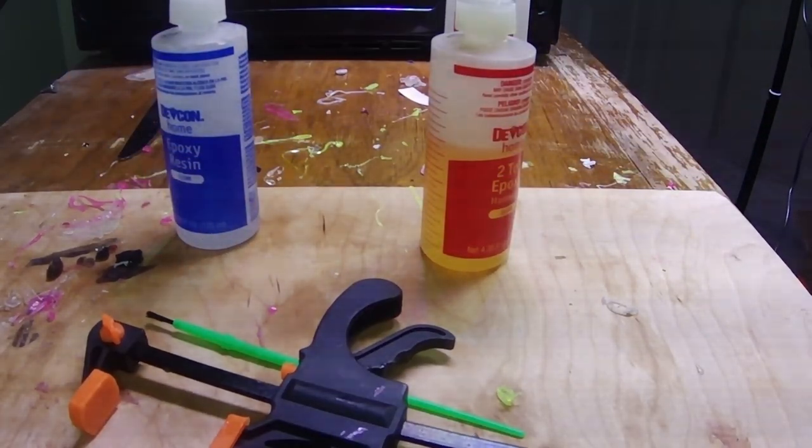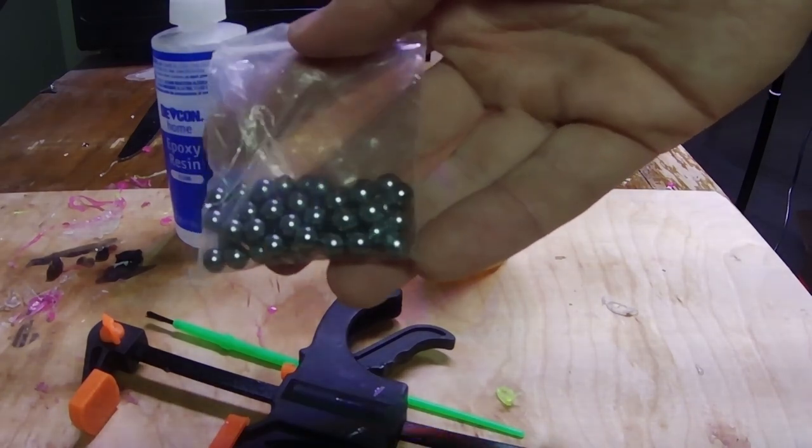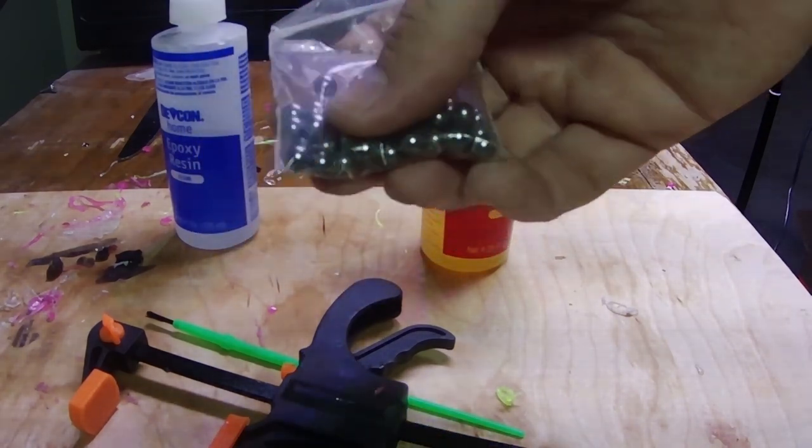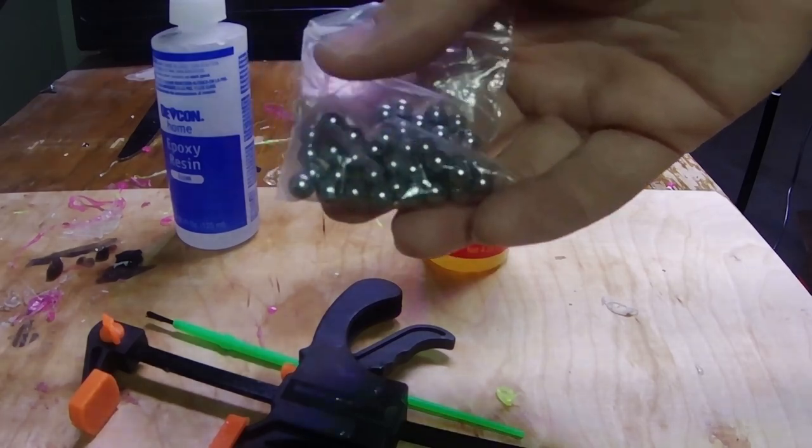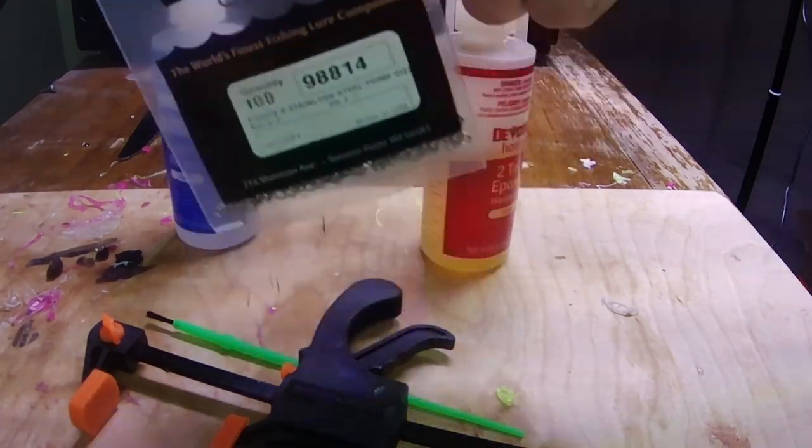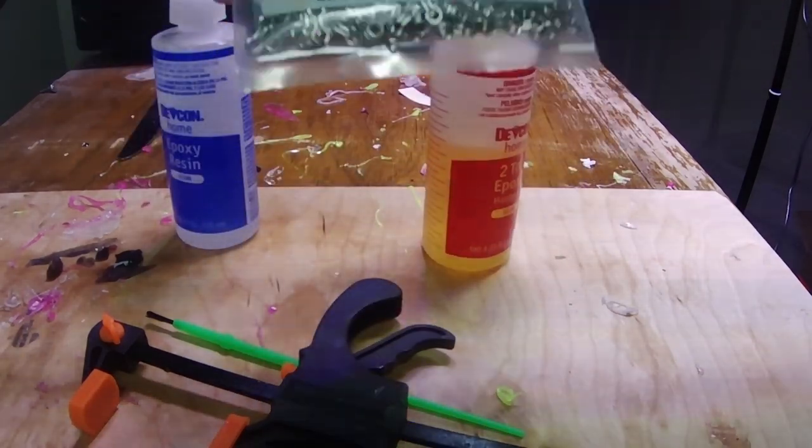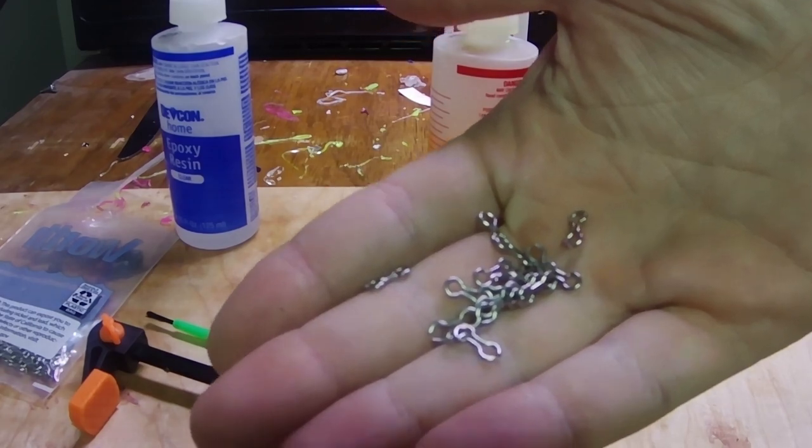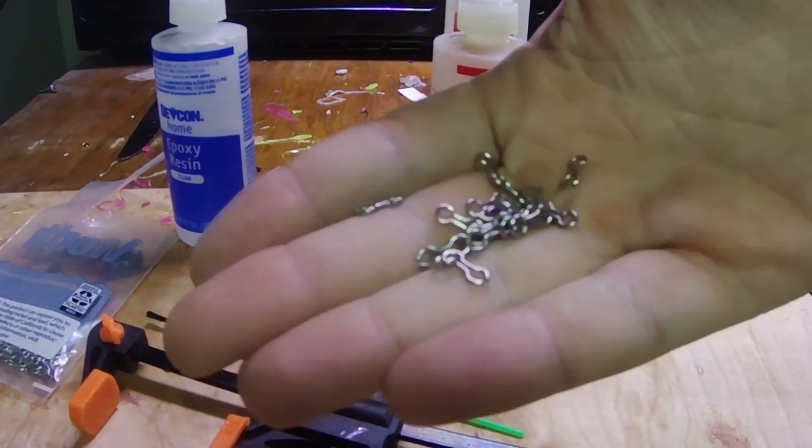All right now the actual lure parts number one pretty self-explanatory. These are a quarter inch stainless steel ball bearings. You can find these anywhere I got mine off of Amazon. Now I'm using I guess an untraditional method for our hook hangers. These little guys are figure eight hook hangers. These are what actual lure makers use to put their baits together.